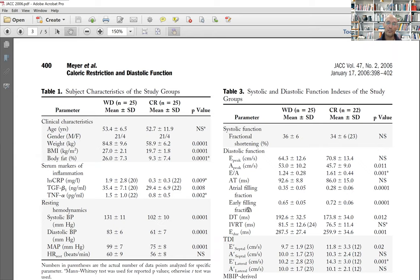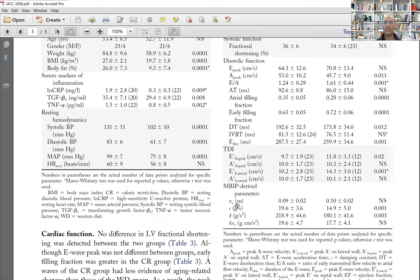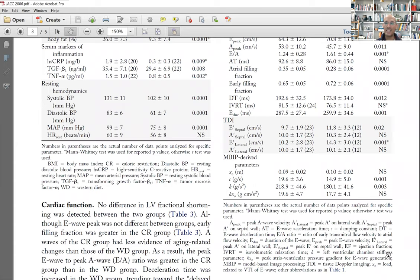So the ventricle is passively filling more than in the age and sex matched controls. But based on these parameters that Shando has developed, here are four of them, especially the K and C are showing that the chamber stiffness - this K is a left ventricular chamber stiffness parameter - is much lower. You see 180 grams per second squared compared to 218, 219 in the controls.